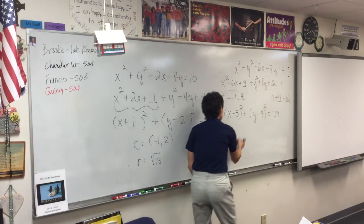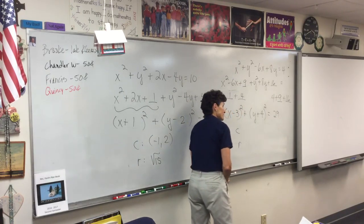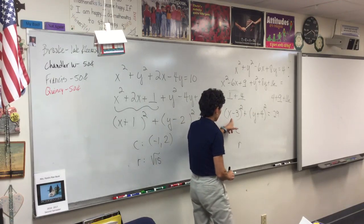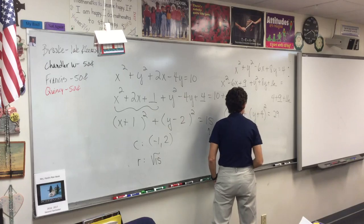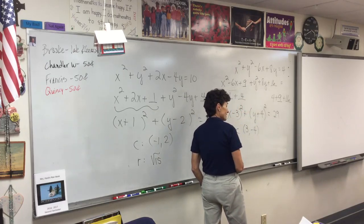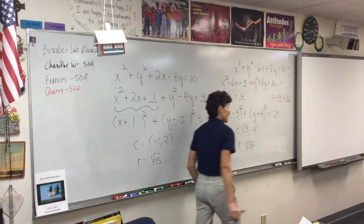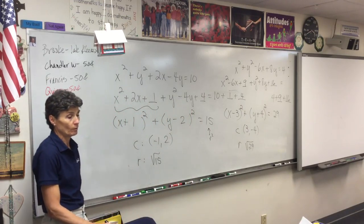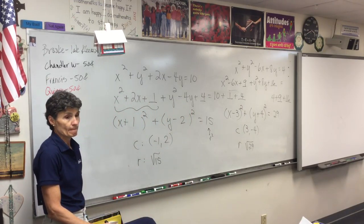So where is my center and radius this time? My center is (3, −4) and my radius is √29. Anybody have a question about the circle?